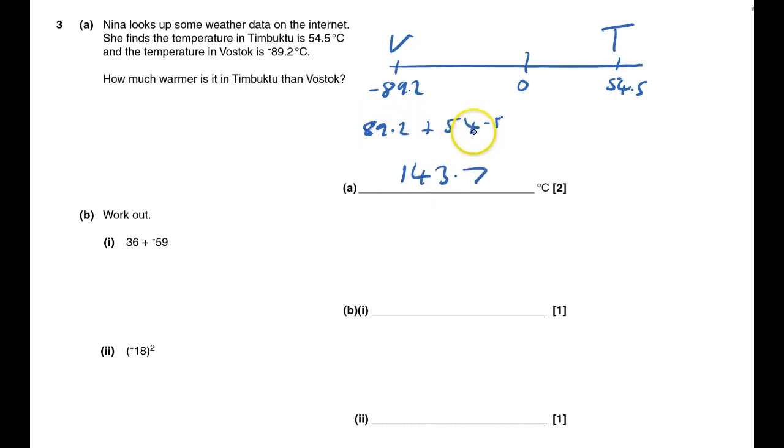Don't forget to use your calculator. For part B, just type in 36 plus and then use the negative sign - maybe a negative in brackets, or it might be a plus-minus button.